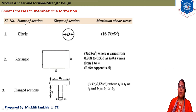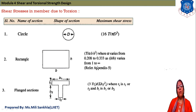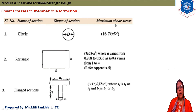We have a table with three columns: the name of the section, the shape of the section, and the equation for maximum shear stress. We will discuss each section one by one. First, we discuss the circular section.